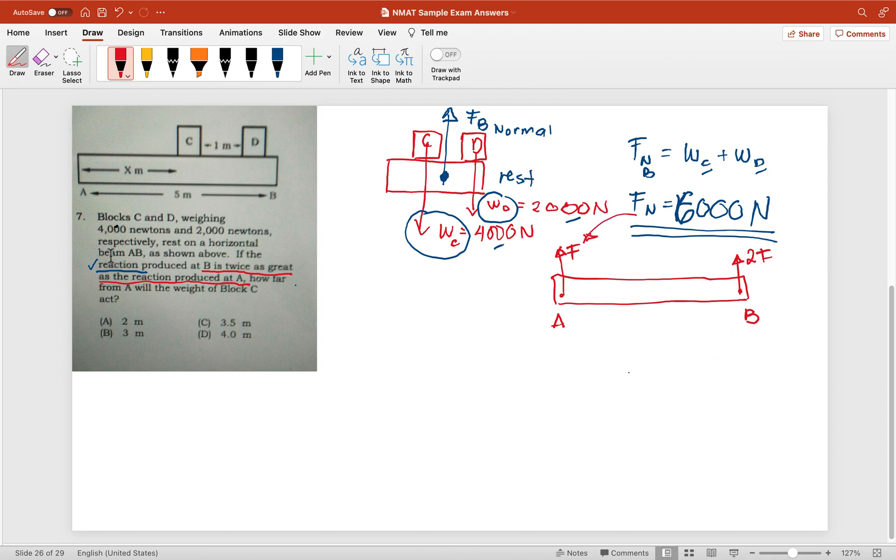So therefore, the normal force has a distributed force of F and 2F. If you add F and 2F, this should equal 6,000. Or simply, 3F equals 6,000. So one force is equal to 2,000 N.